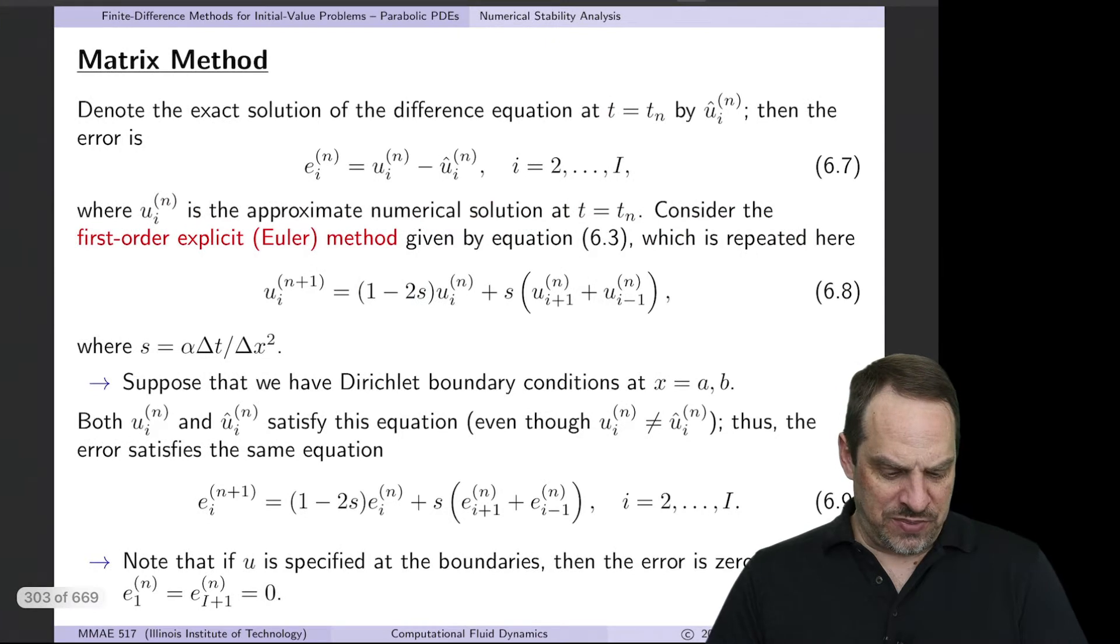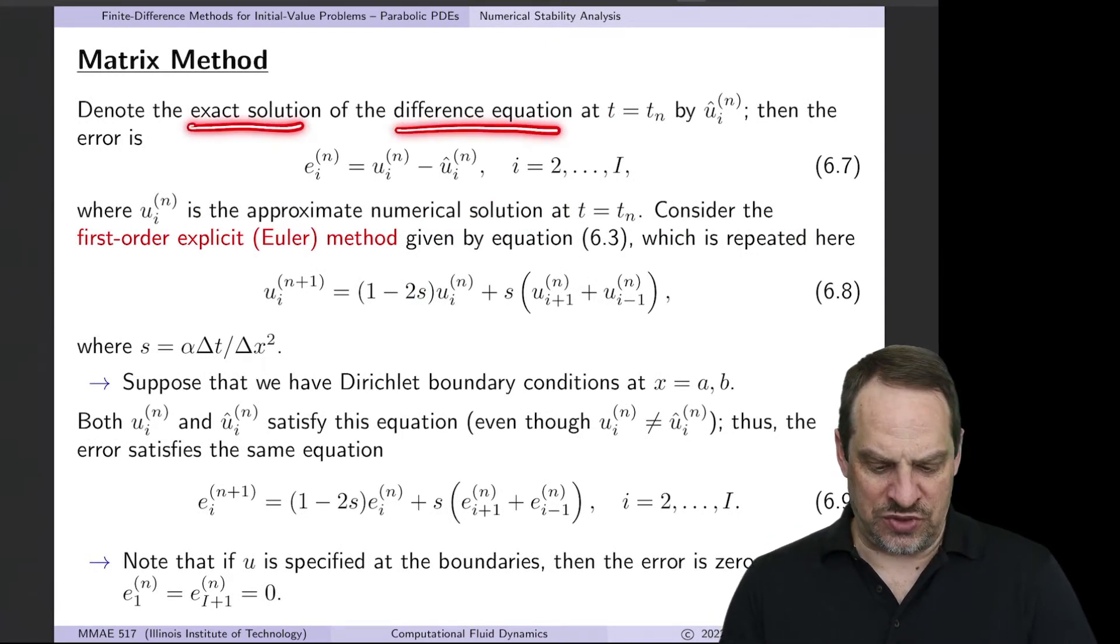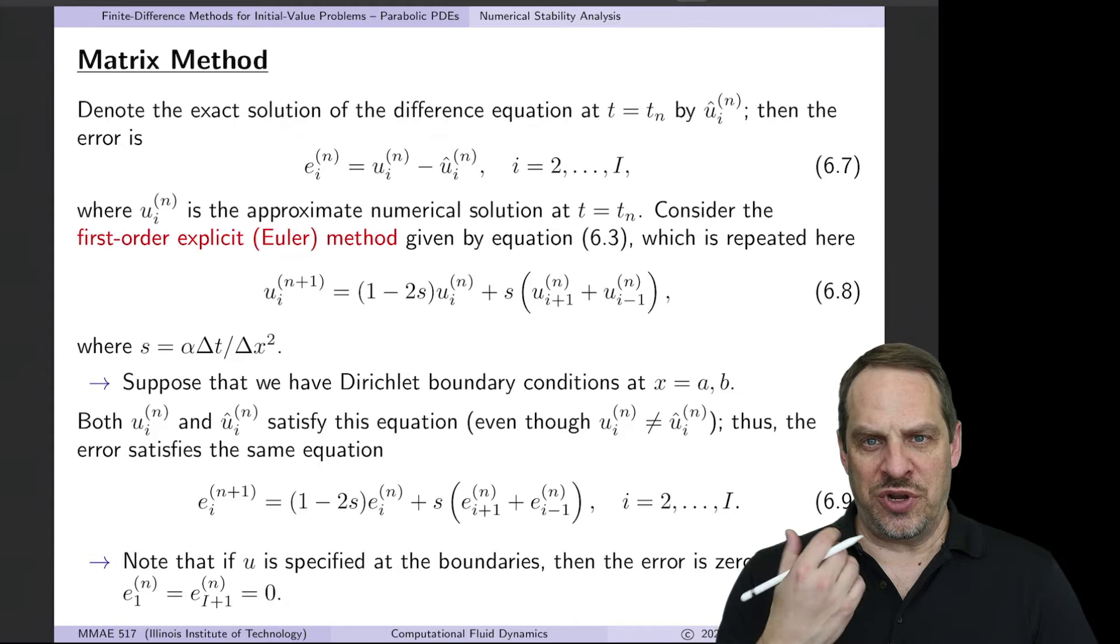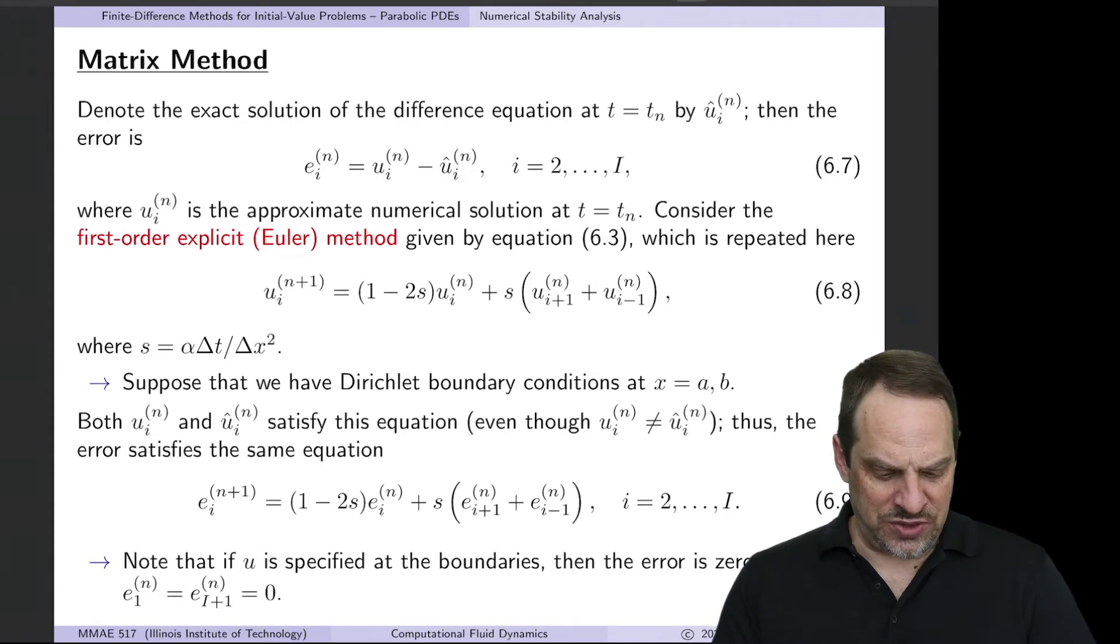So the matrix method. Let's imagine that we have the exact solution of our difference equation. Obviously we don't. That's why we're trying to approximate it numerically. But let's just pretend that we do. We'll call that u hat. So u_i^n hat is the exact value at x equals x_i and t equals t_n of the solution of our difference equation. Then we can define an error. The error will be the difference between the numerical approximation that we have as we march forward in time and this exact solution of the same difference equation. So that's the error E_i^n.